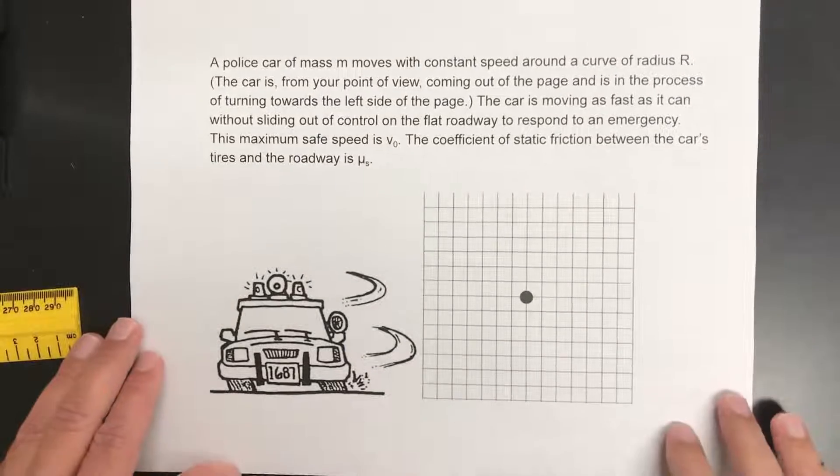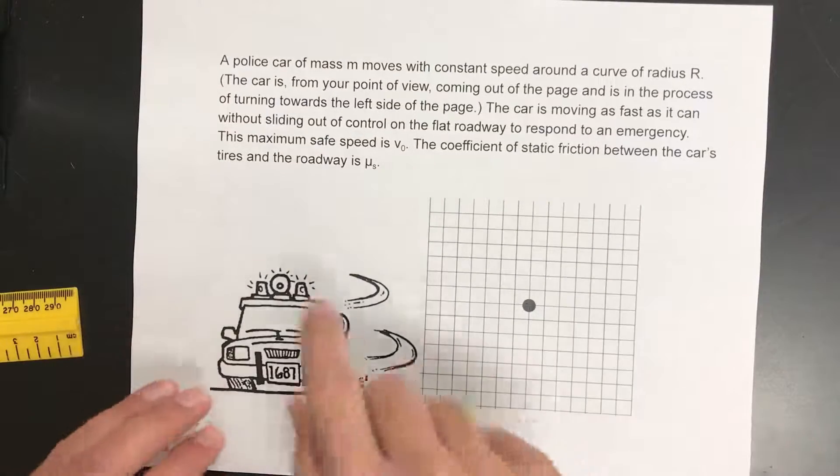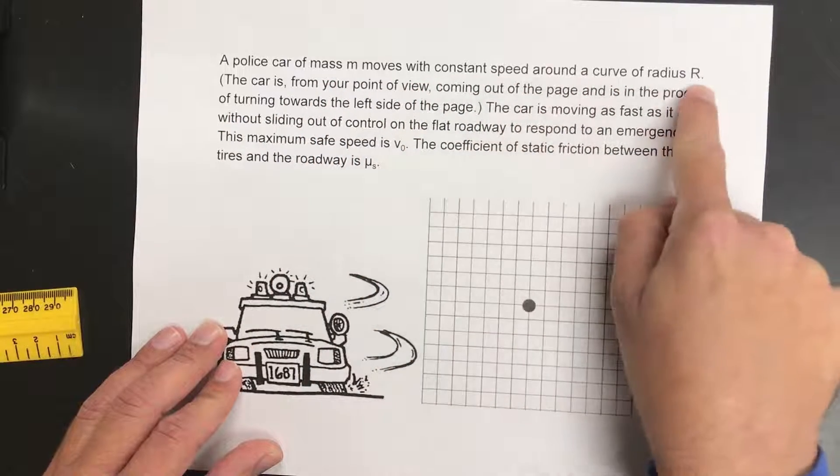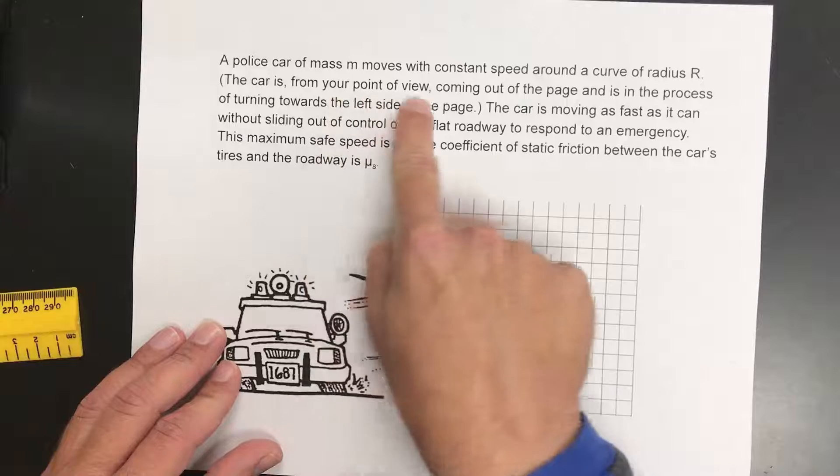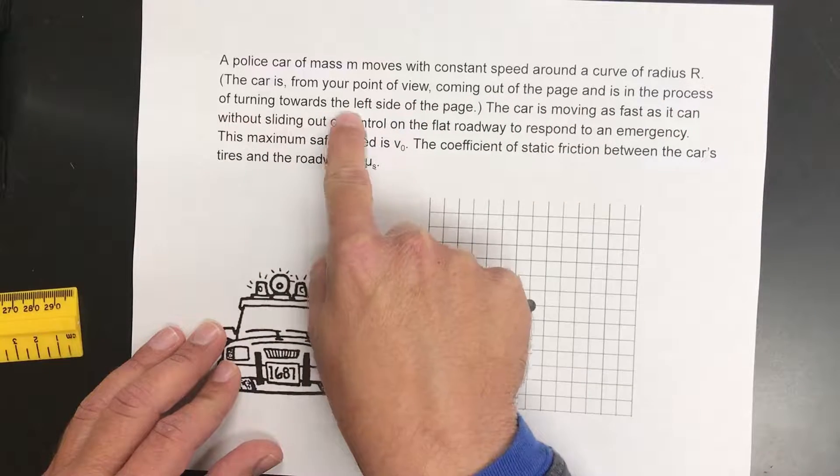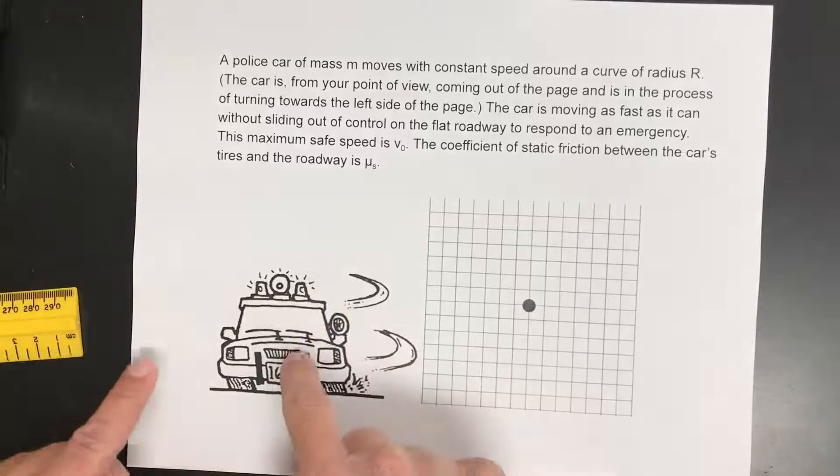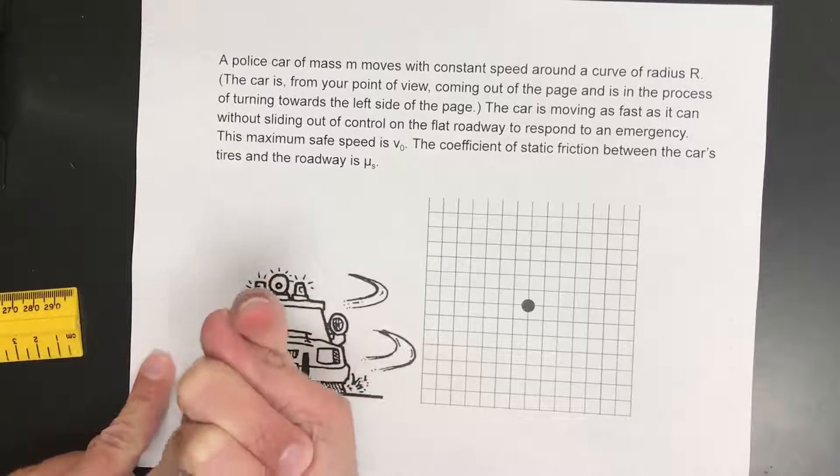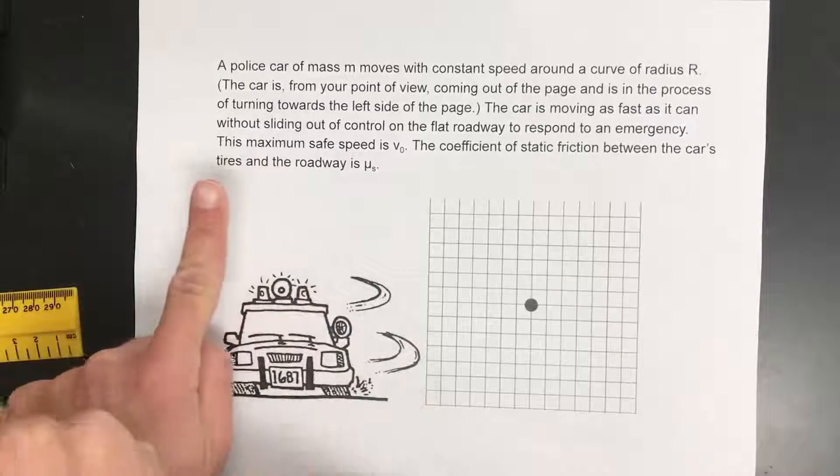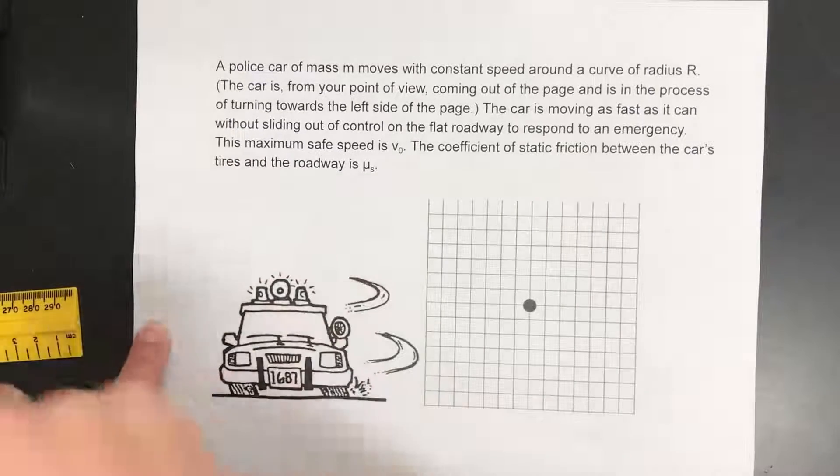Hey guys this is 3F going in horizontal circles. So it says a police car of mass M moves with constant speed around a curve of radius R. The car is from your point of view coming out of the page and is in the process of turning towards the left side of the page. So if this is the car it's coming this way towards you and going around like this. Here's the center over here and it's coming like that.